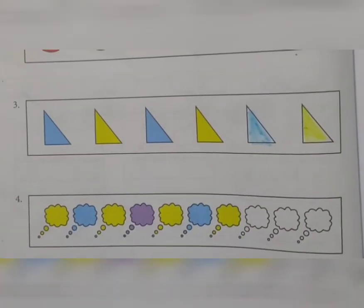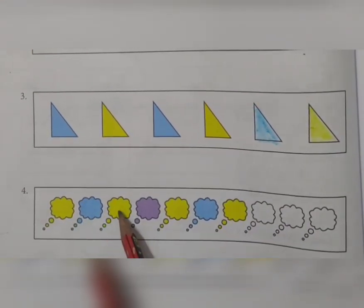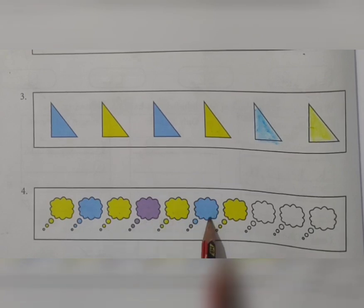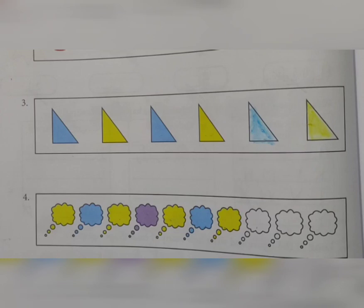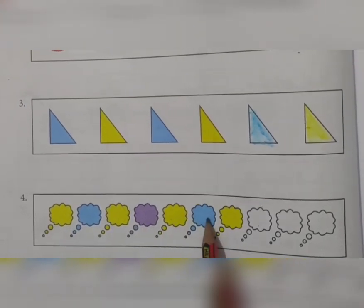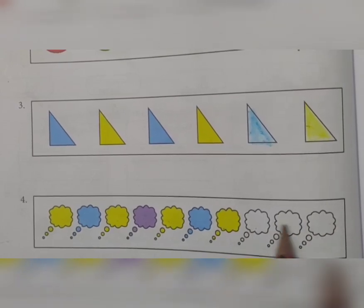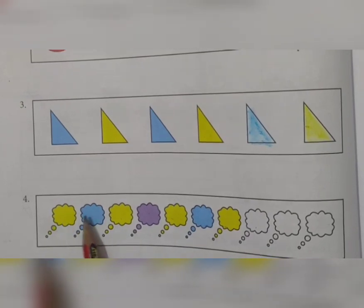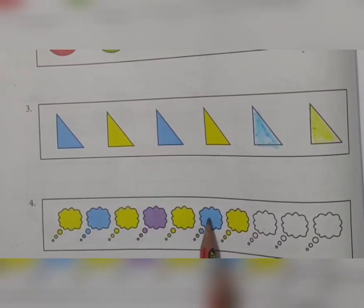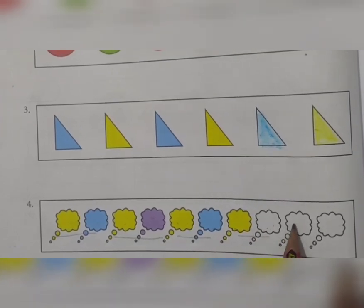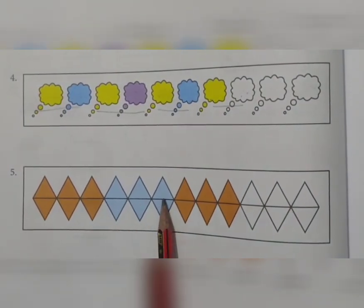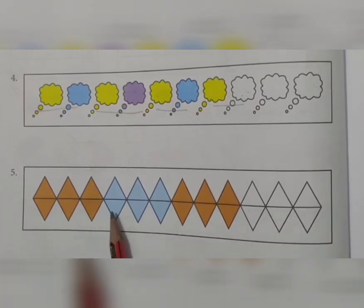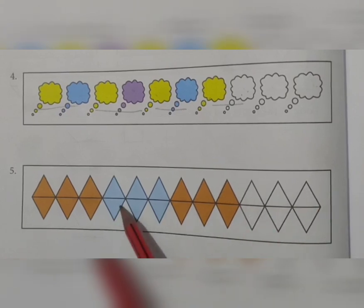Fourth pattern: yellow-blue, yellow-purple, yellow-blue, yellow-purple - groups of two. So then yellow-purple comes, and then yellow-blue combination again. Fifth pattern: three orange triangles, then three blue, then three orange - triple A, triple B, triple A, triple B. So the next group of three will be blue color.